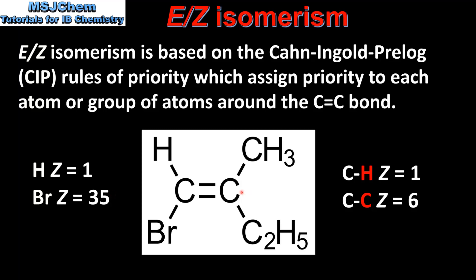On the right carbon atom we have a CH₃ group and a C₂H₅ group. Because this carbon atom is bonded to two other carbon atoms we need to look at the next atom in the chain. In the CH₃ group the next atom would be a hydrogen, which has an atomic number of 1. In the C₂H₅ group the next atom is a carbon atom, which has an atomic number of 6. Therefore we assign the highest priority to the C₂H₅ group.